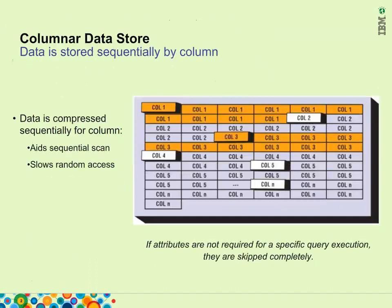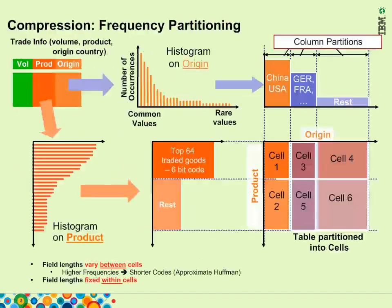Note that while IWA uses columnar technology, it is optimized for in-memory processing. A copy of the memory image is stored on disk. IWA uses a technique called frequency partitioning. The table Trade Info contains columns: volume, product, origin, and country. Histograms are built for each column to determine frequency of data value occurrences, as shown with origin and product.